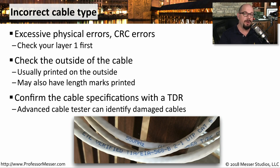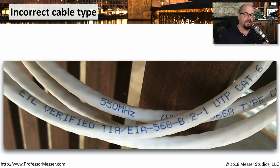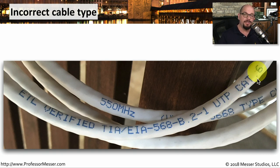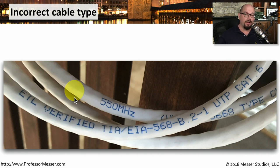Here's a larger picture of the outside of a cable from the studio. You can see this one is rated for 550 megahertz, which makes it at least a category 6 cable. Looking at the outside, it says ETL verified TIA EIA 568B standard. It is a UTP or unshielded twisted pair cable, and it is a category 6 rated cable. Some cables even have length markers on them, so you can look at a cable going into a wall and the cable coming out on the other side to see the difference in lengths — in those cases, you wouldn't have to measure manually or get a TDR.